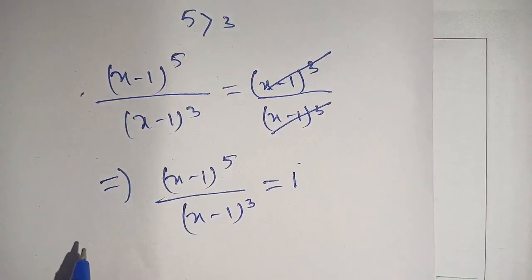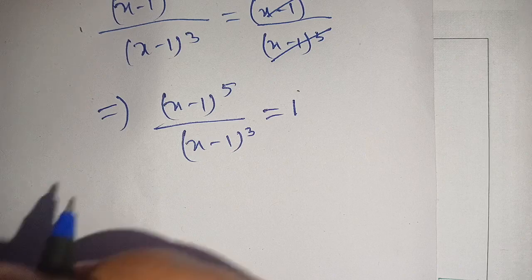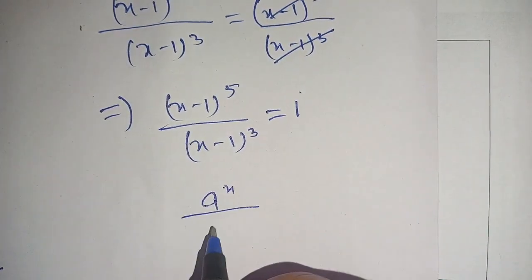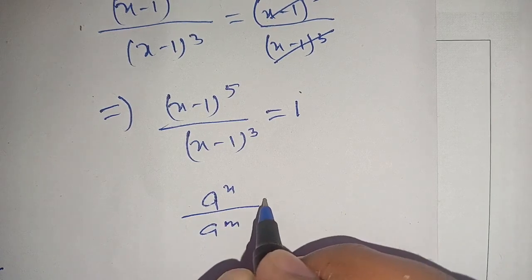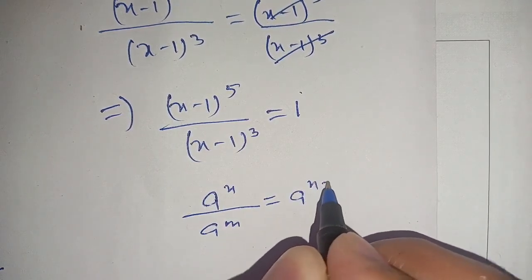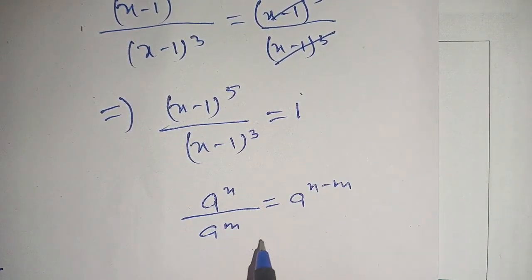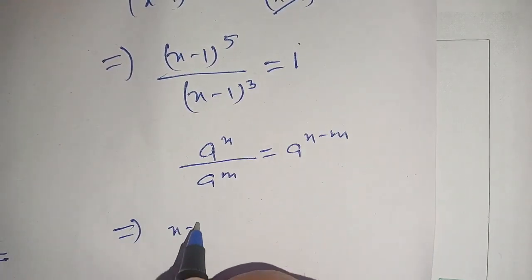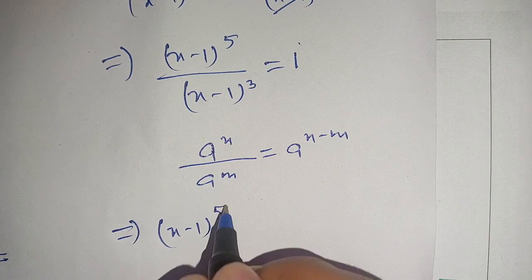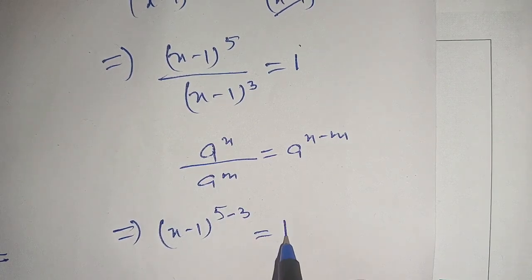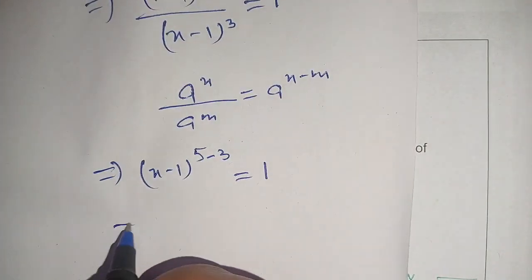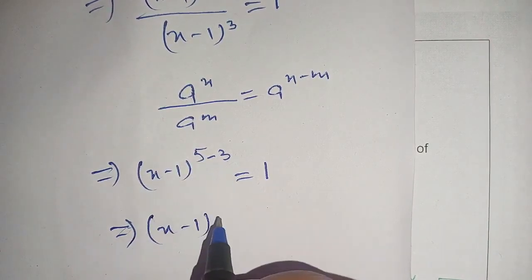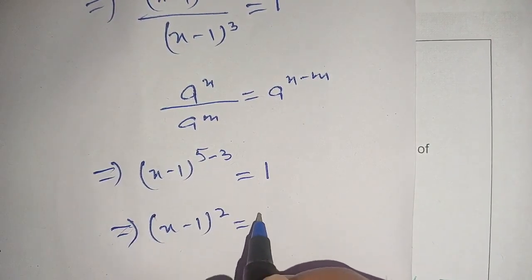Now the left hand side is in the form of a raised to power n divided by a raised to power m, which equals a raised to power n minus m. Applying this identity on the left hand side, we get (x minus 1) raised to power 5 minus 3, which becomes (x minus 1) raised to power 2, is equal to 1.